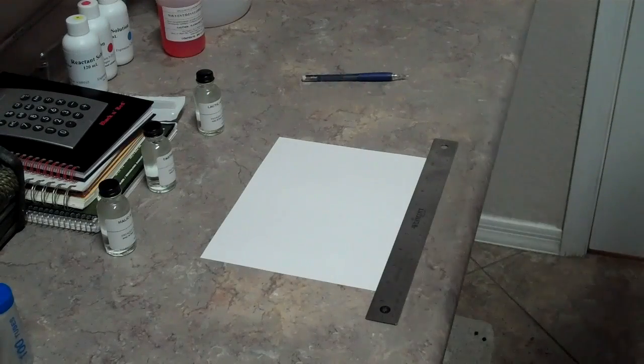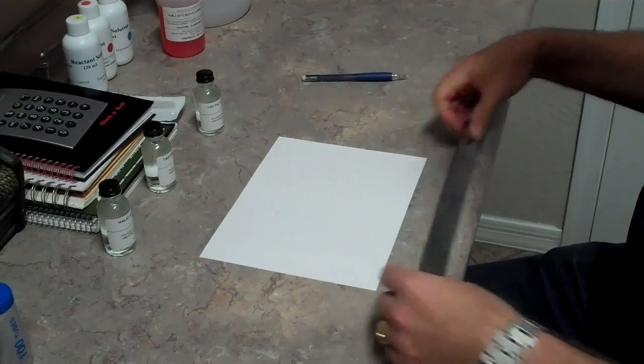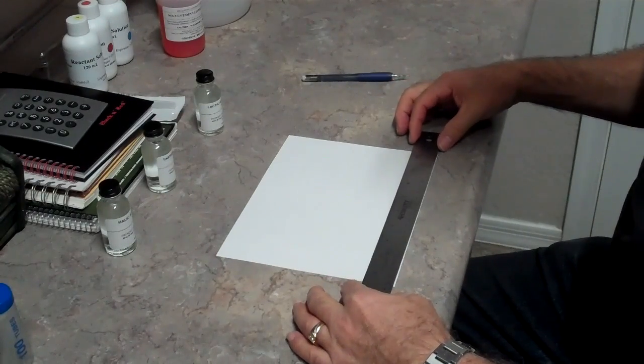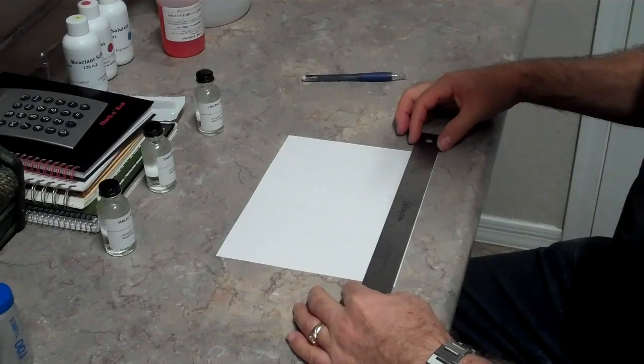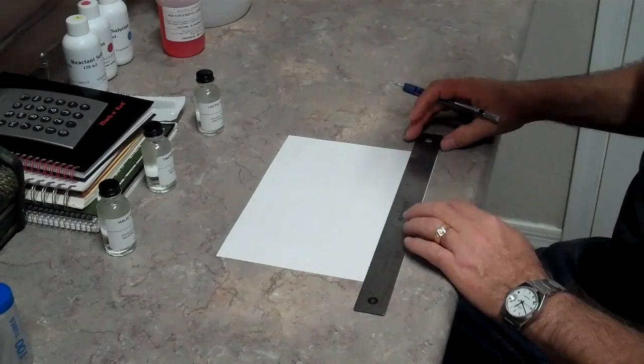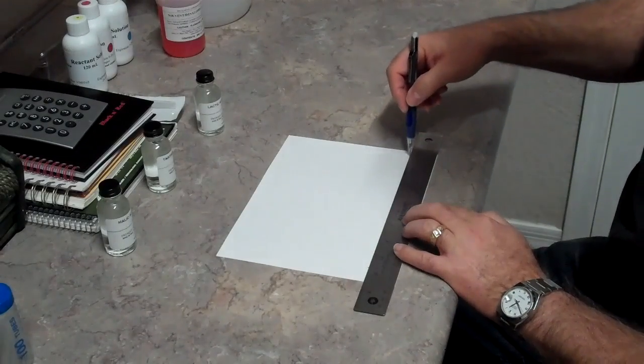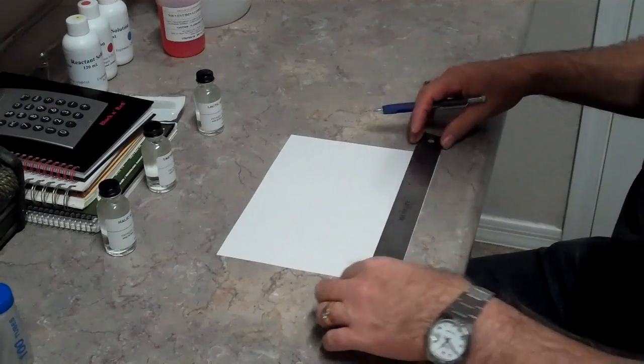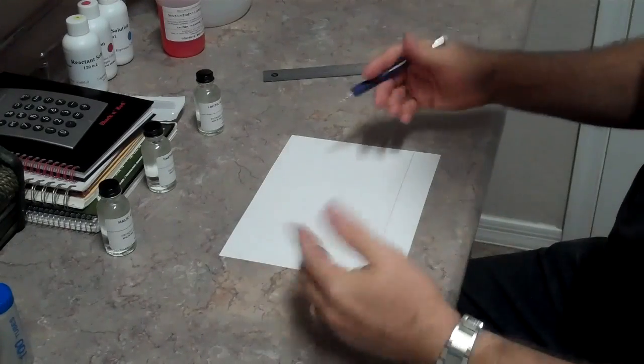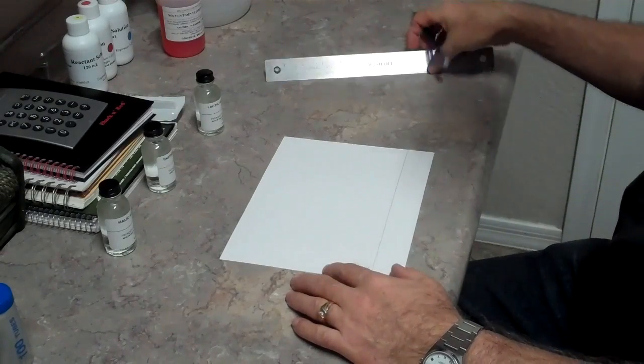So the first thing we're going to do is draw a line across the bottom edge of the chromatography paper, about an inch to an inch and a half, whatever the thickness of your ruler is, in pencil. You don't want to use pen because pen might inhibit the test, but pencil seems to work the best.